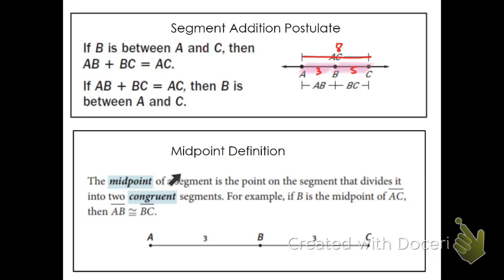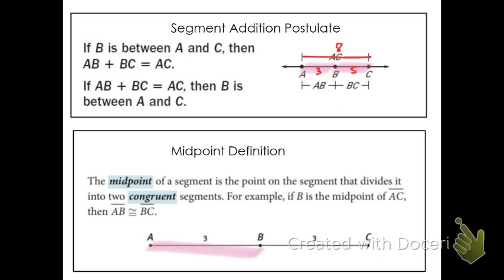Let's look at our midpoint definition. The midpoint of a segment is the point on the segment that divides it into two congruent segments. Congruent means same length in this situation. For example, if B is the midpoint of AC, then AB is congruent to BC — there's our congruent symbol. If I told you B was the midpoint, then we'd know that the length of AB must be the same as the length of BC. These are very simple ideas, but let's see how they flesh themselves out in some geometry problems.